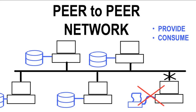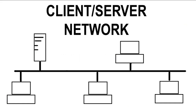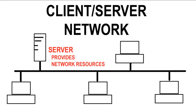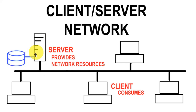We have another classification within the host roles category, and that is a client-server network. Unlike a peer-to-peer network, network hosts have specific roles assigned to them. Certain hosts are assigned to be servers, and a server provides network resources. You also have clients — a client does not provide network services, it consumes them. In a client-server network, client workstations will not have shared storage or shared printers; all those services are provided by the server. Servers provide the resources; clients simply use those resources.